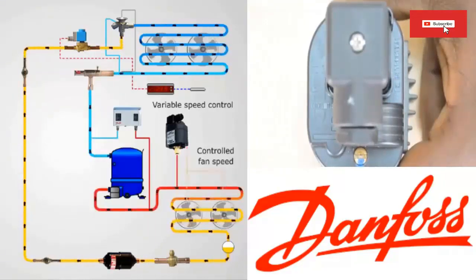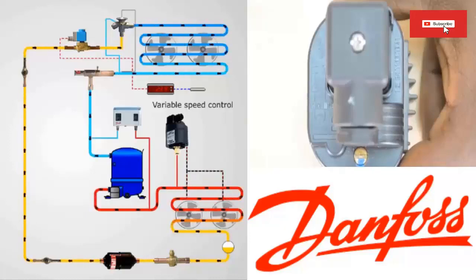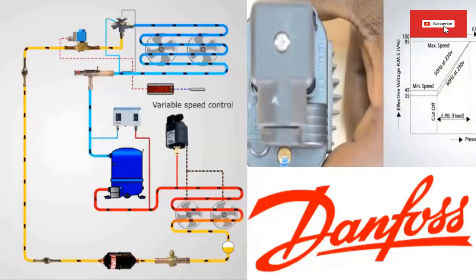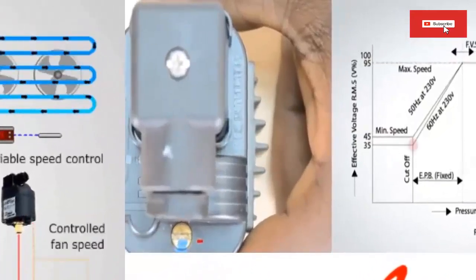4. By increasing the speed of the fan, it causes a decrease in the condenser pressure, collaborating with the durability of the compressor of the refrigeration cycle.